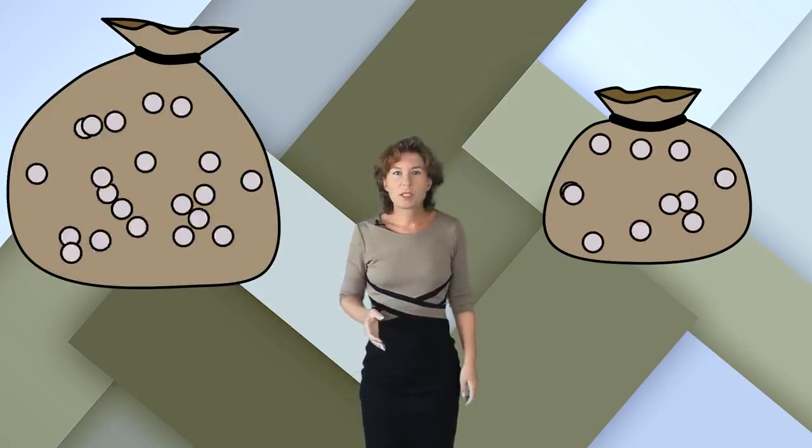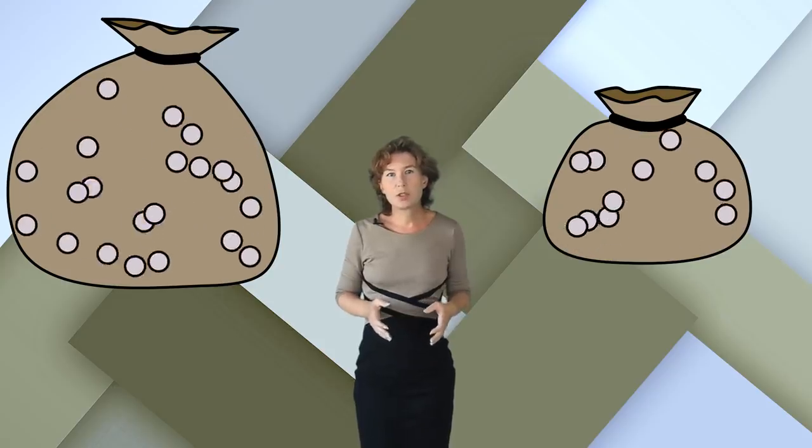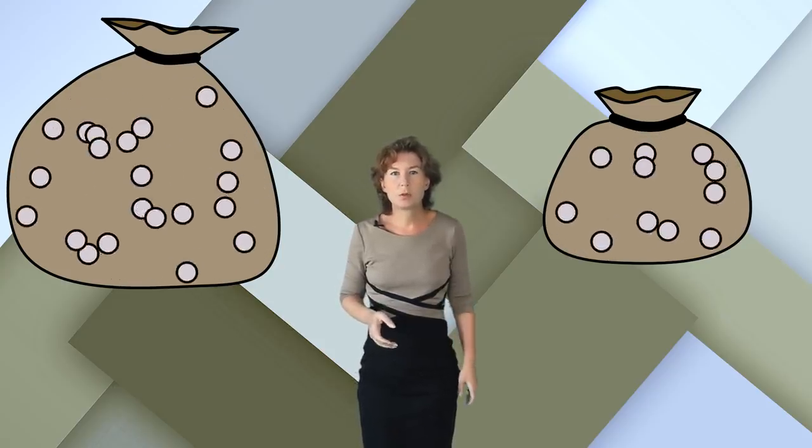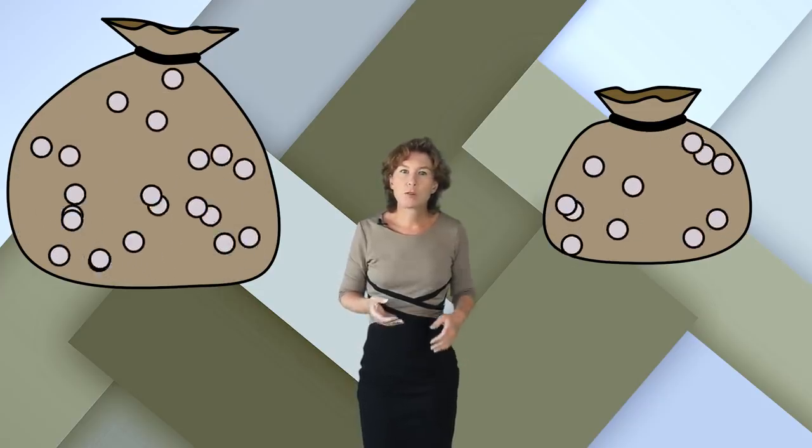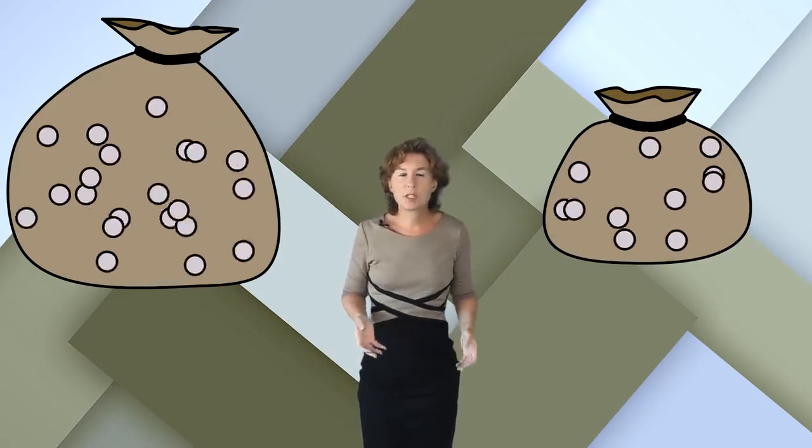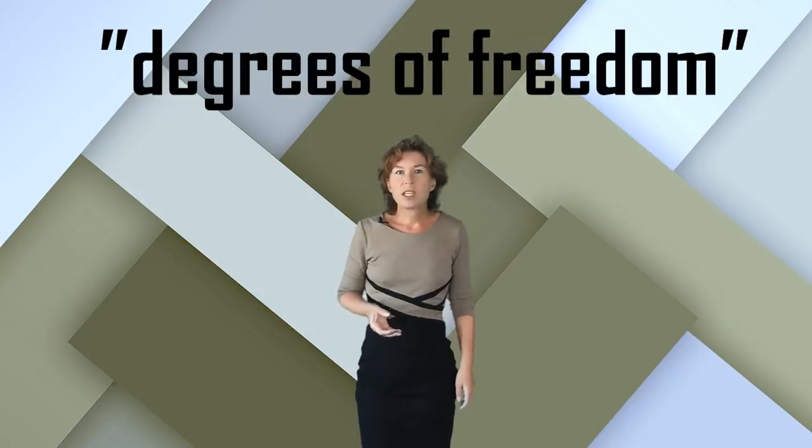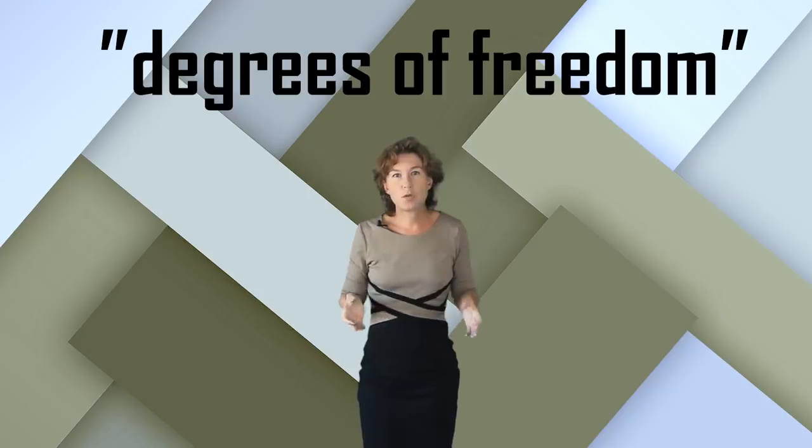They call it the holographic principle and the key idea is this. Usually the number of different things you can imagine happening inside a part of space increases with the volume. Think of a bag of particles. The larger the bag, the more particles and the more details you need to describe what the particles do. These details that you need to describe what happens are what physicists call the degrees of freedom, and the number of these degrees of freedom is proportional to the number of particles which is proportional to the volume.